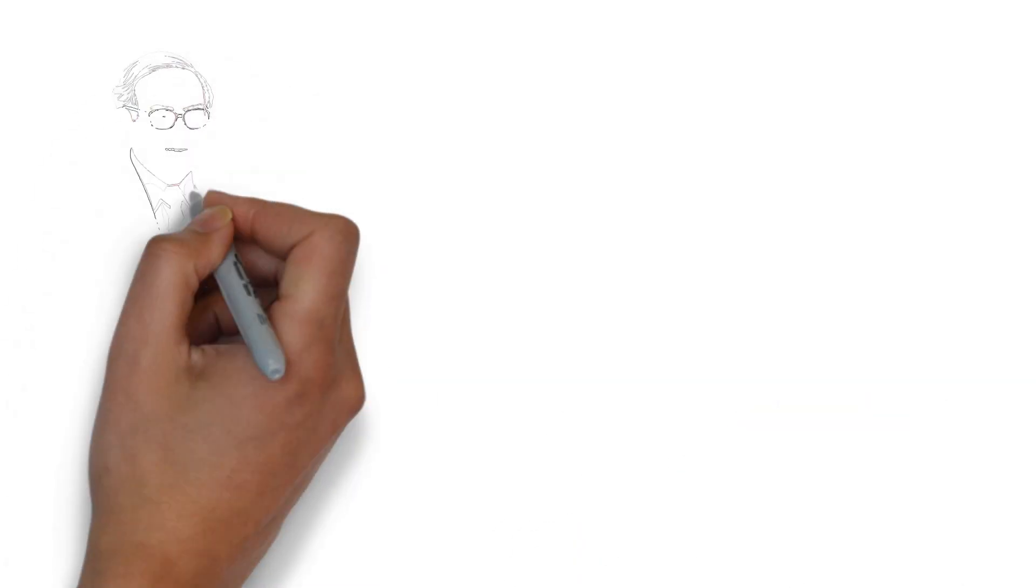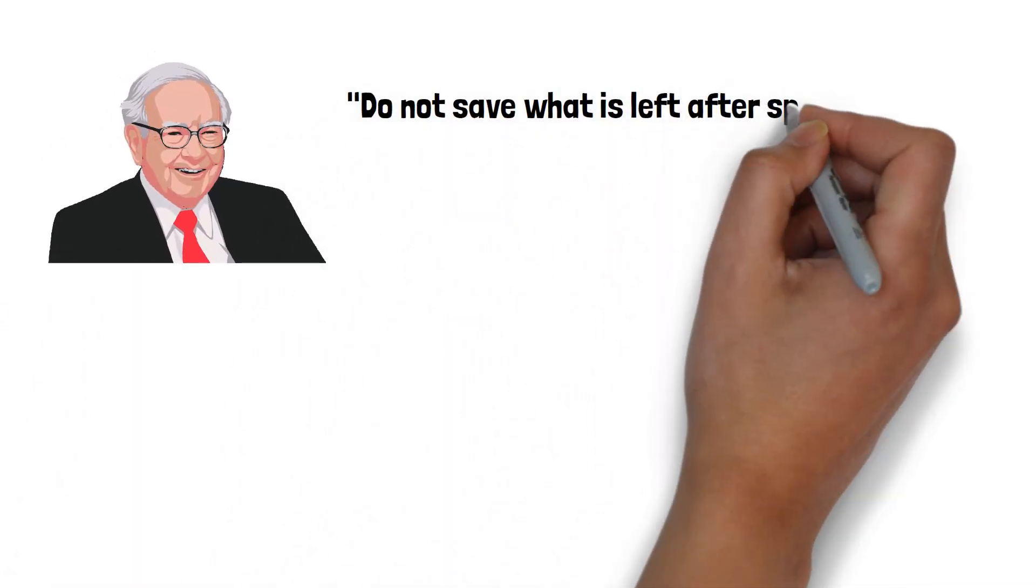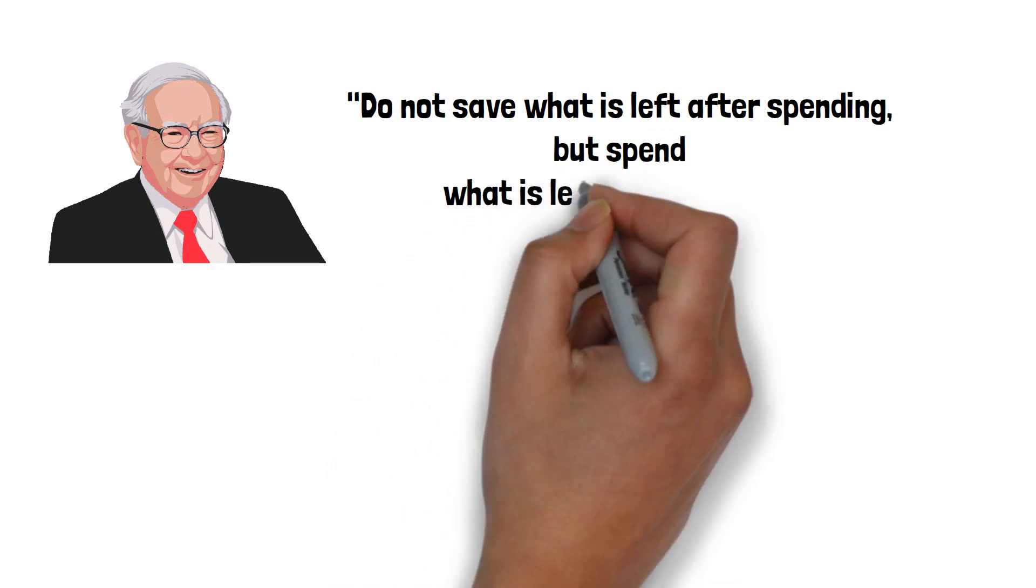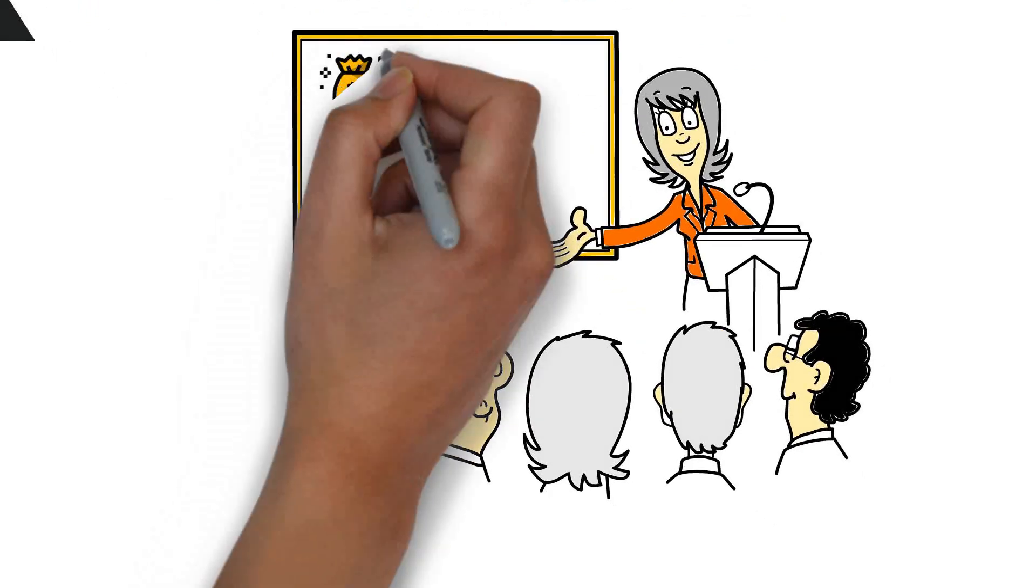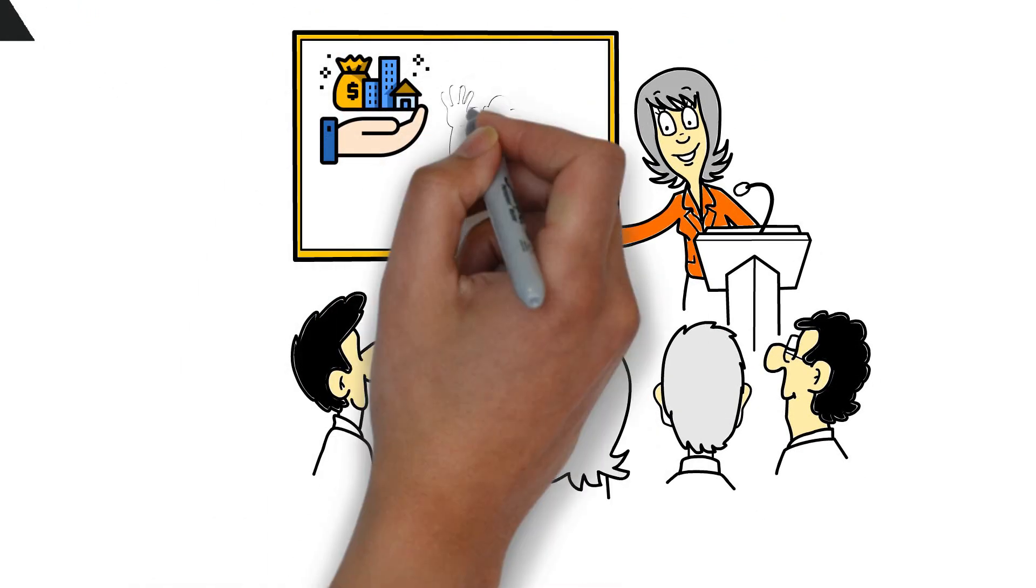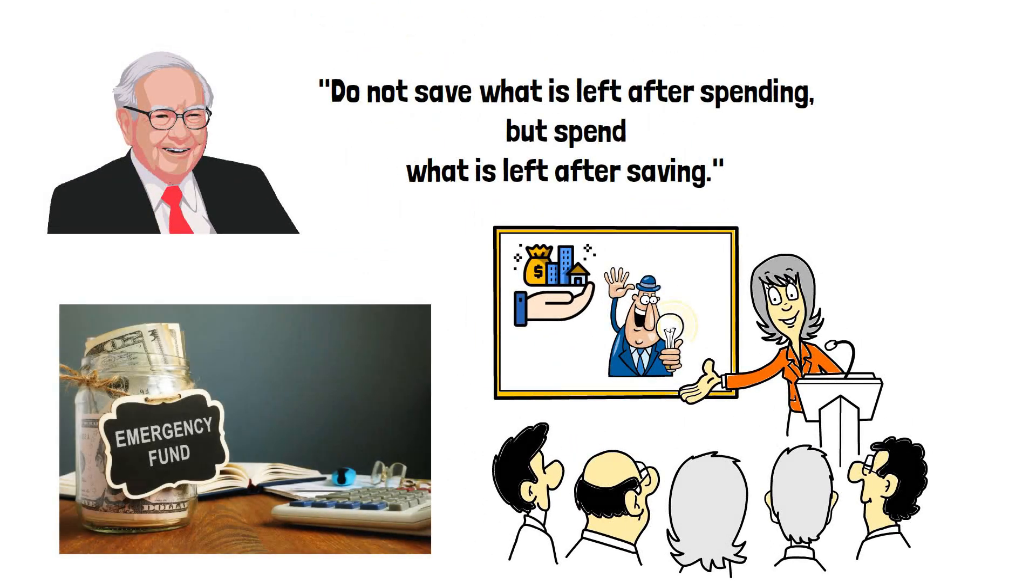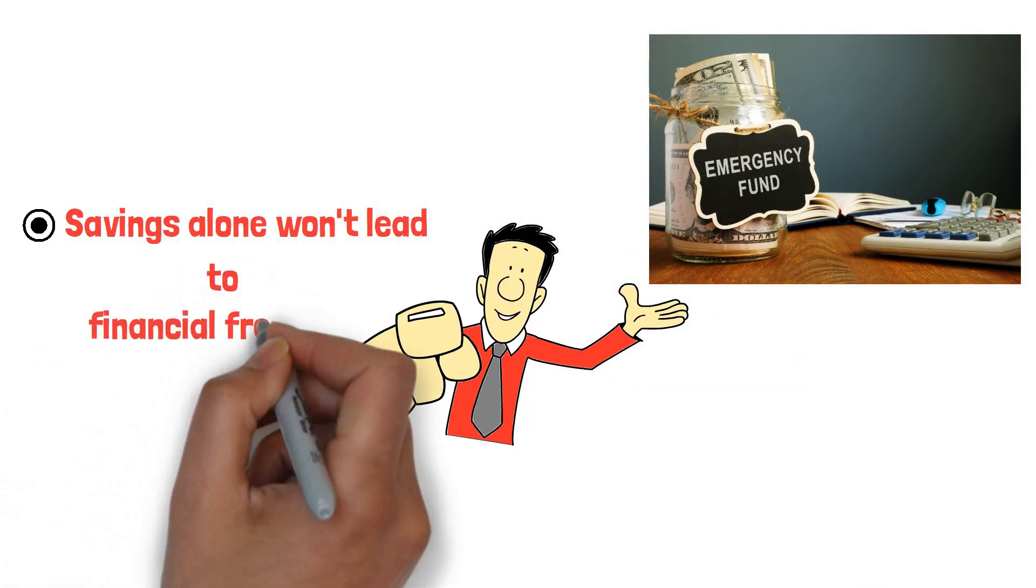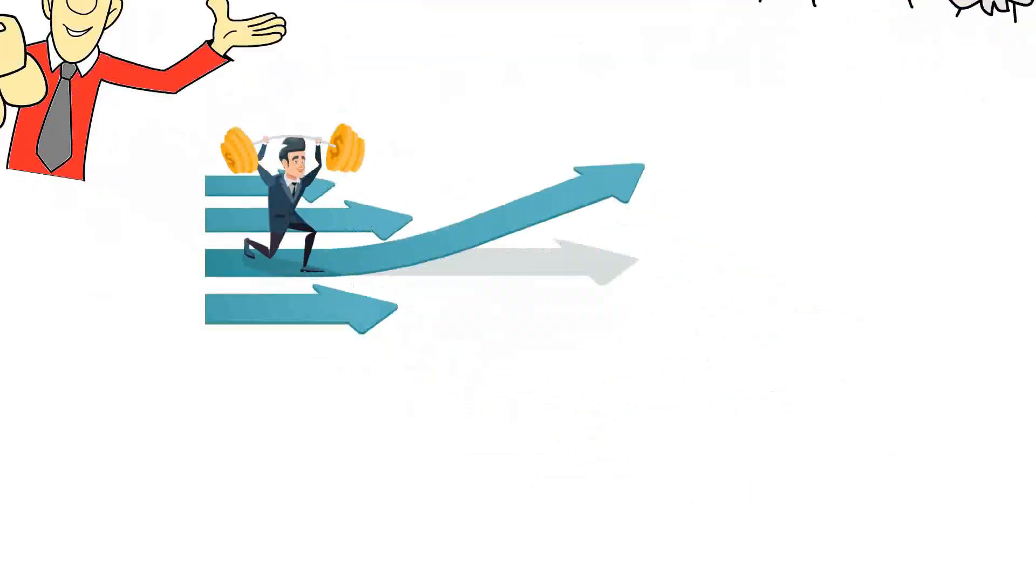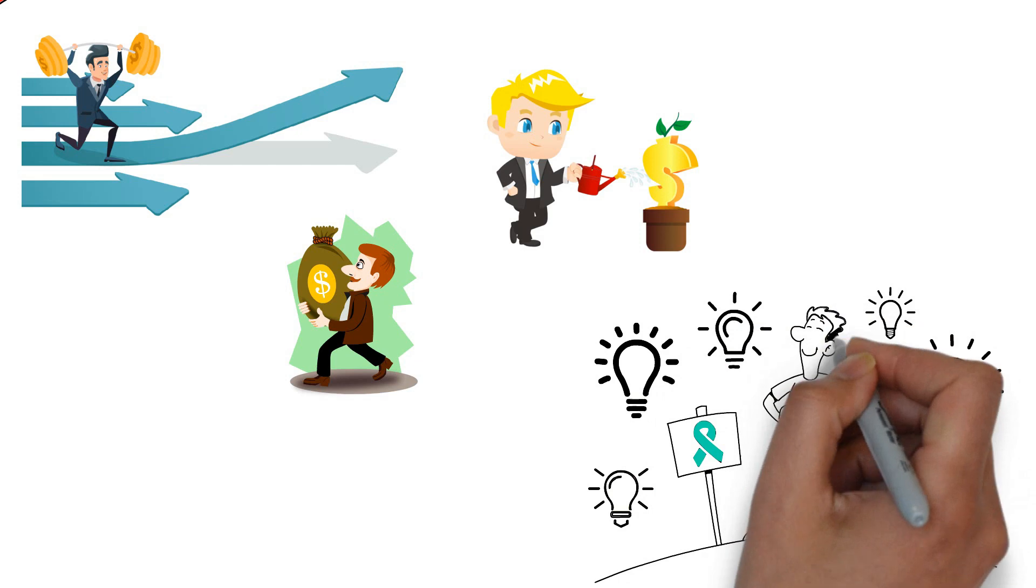A quote from billionaire investor Warren Buffett illustrates this, Do not save what is left after spending, but spend what is left after saving. This quote highlights the importance of prioritizing saving and investing before spending money on non-essentials. Of course, it's essential to have an emergency fund for unexpected expenses. Still, it's crucial to recognize that savings alone won't lead to financial freedom. Investing wisely can protect your buying power, grow your wealth, and work towards achieving your financial goals.